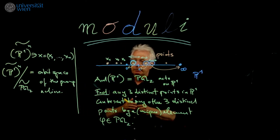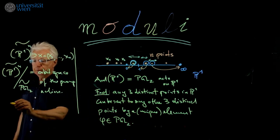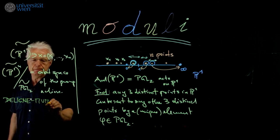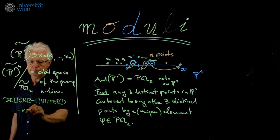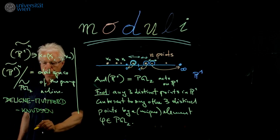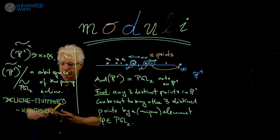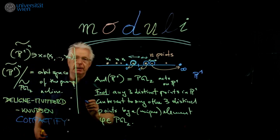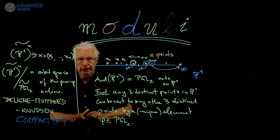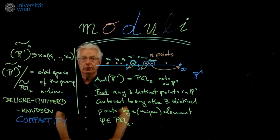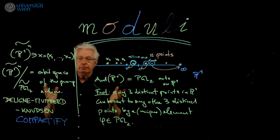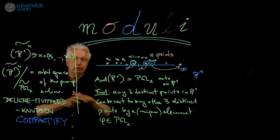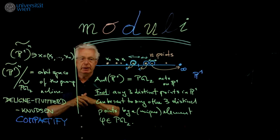So the big story of Deligne, Mumford, and Knudsen was to compactify this space. And if you go to the original papers, you will see that this is high-flown machinery. It uses a lot of technique and it's difficult to access. So what we will do, we will present a very easy and gentle-going approach to this problem, to this compactification.